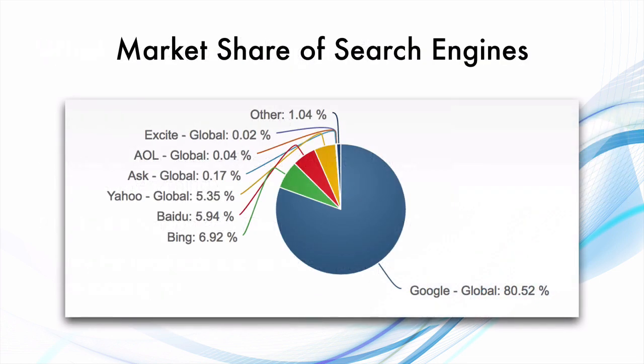So now let's look at the market share of search engines. We keep talking about search engines, but basically this entire course will be targeted at one particular search engine which is Google. Right now the market share of Google overall, when you consider the international average, is 80.52%, which is a pretty big market share.